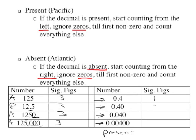0.4 has one sig fig. Ignore this zero and we count: one, two. So once you start counting, you count to the end. This zero is significant — it means it's precise to this position.